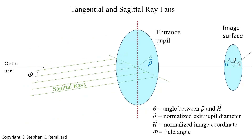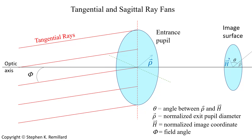Sagittal rays fall along a line perpendicular to the line that the tangential rays follow. If the tangential rays enter the optical system at a skewed angle phi — the field angle — then so do the sagittal rays. You optimize an optical system within a range of acceptable field angles; for example, plus 10 to minus 10 degrees.